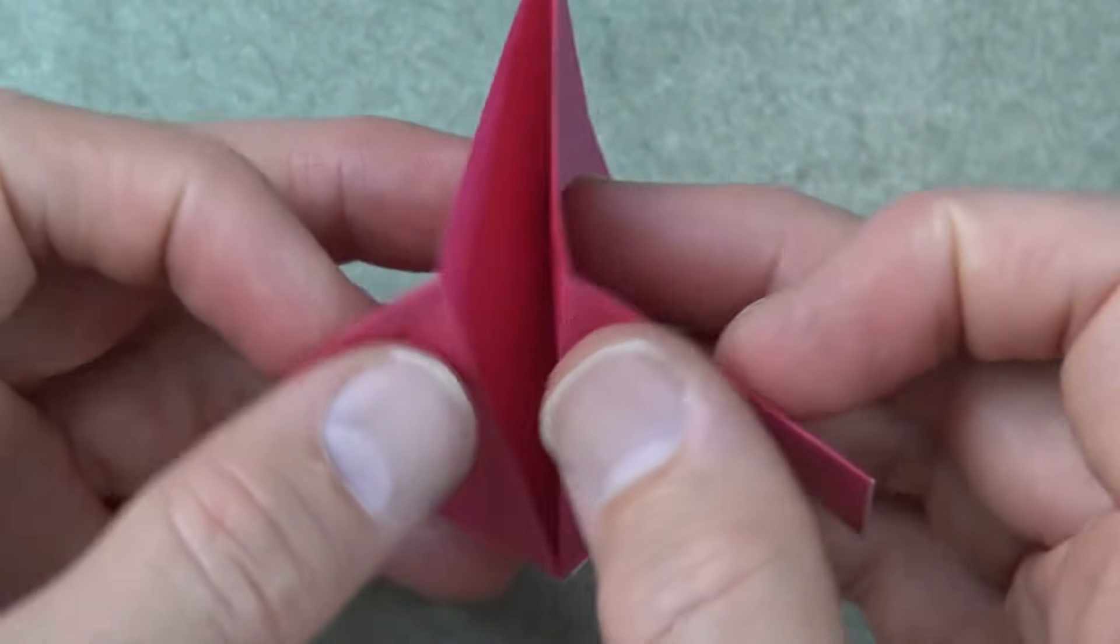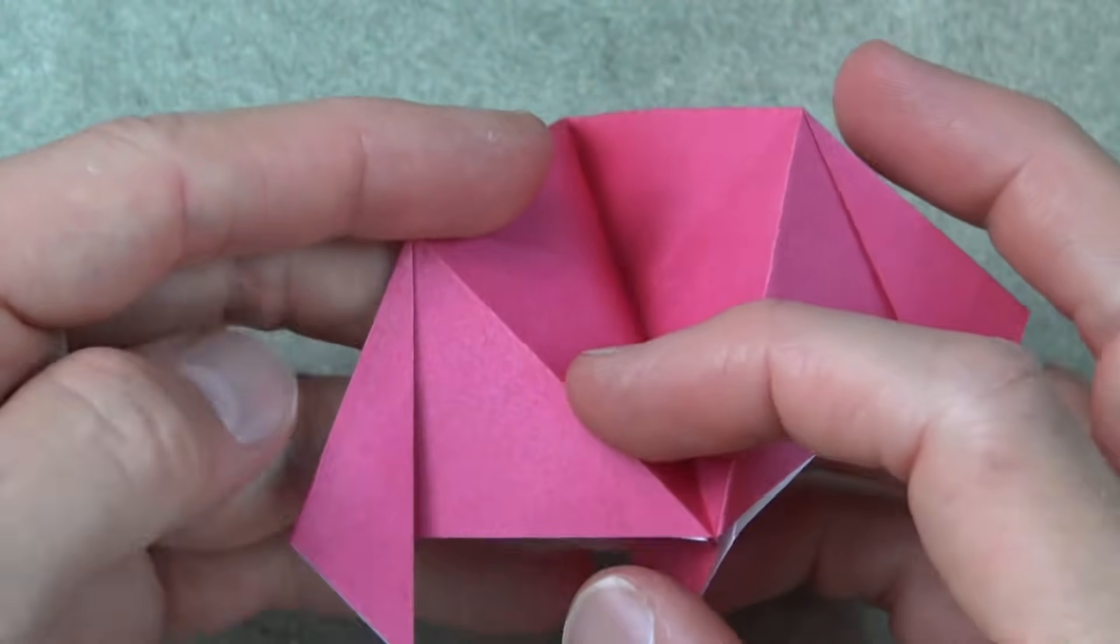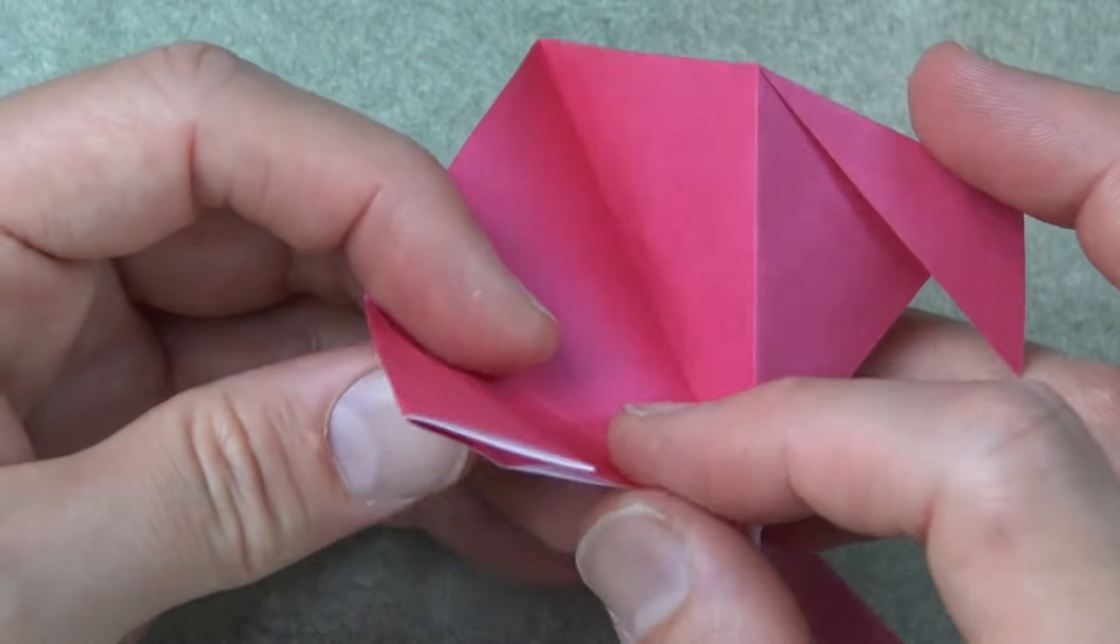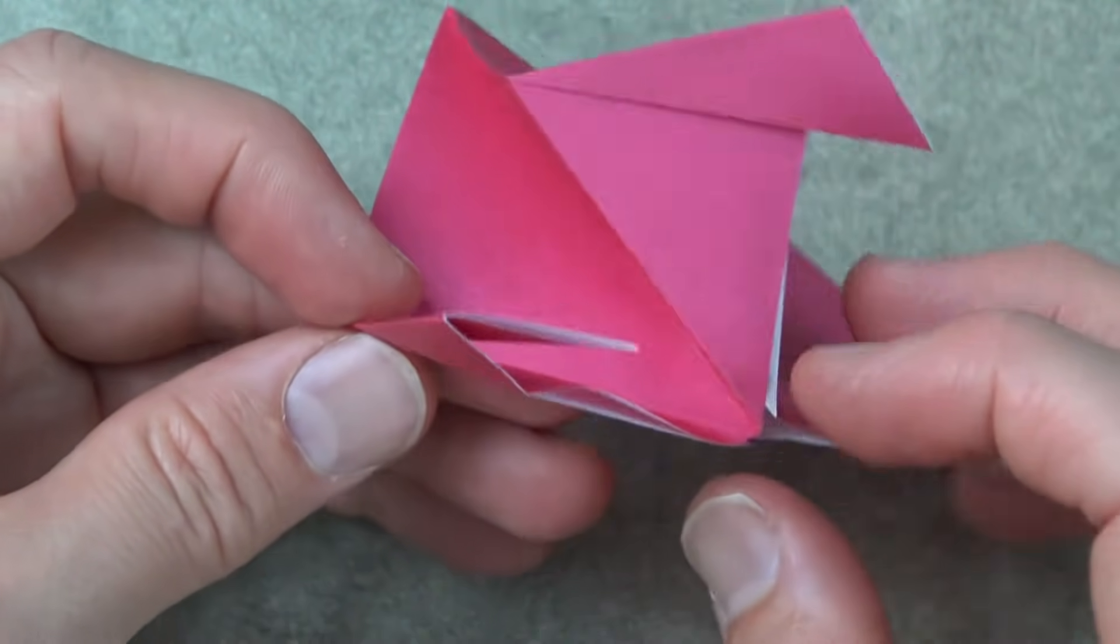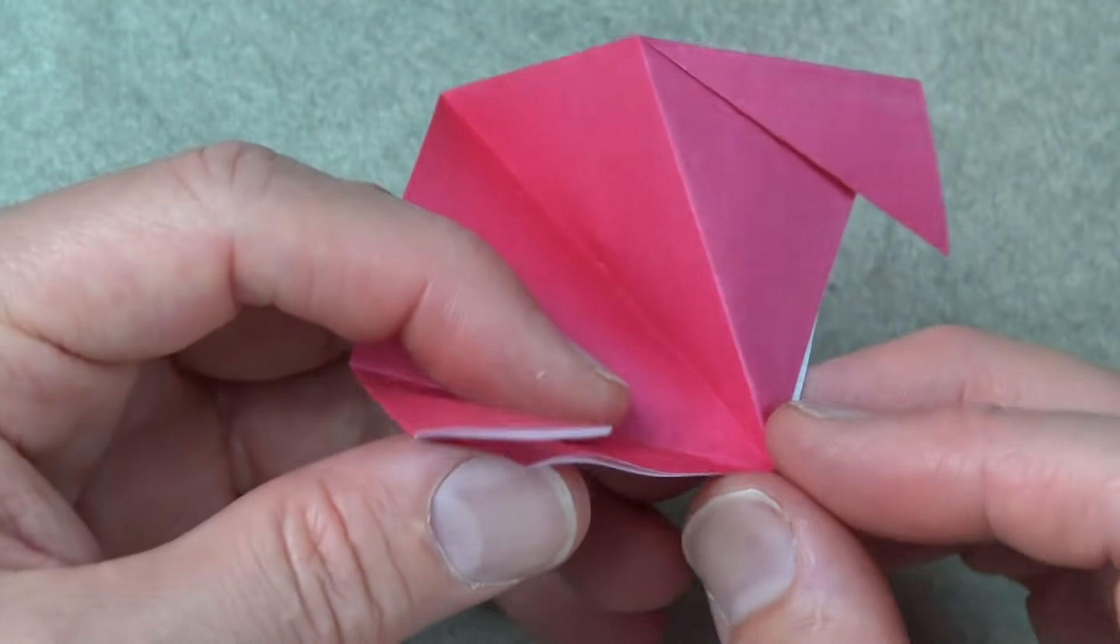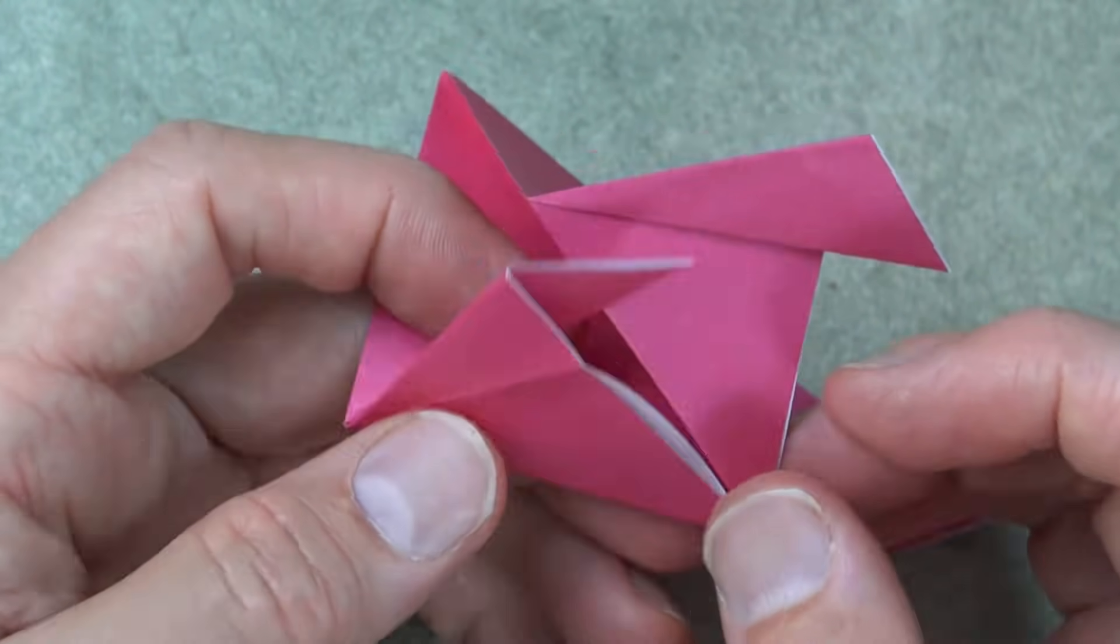Separate these flaps like this, and we want to reverse these creases. So make this flap go like this. We're folding right on this point. Careful not to tear right around here. Just fold right on the existing creases like that.